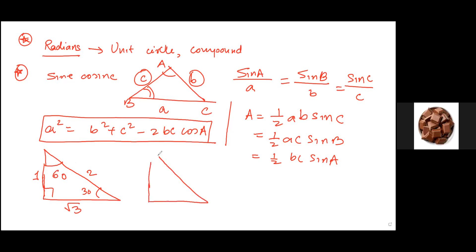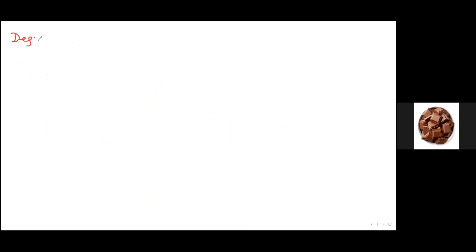Next is the 45-45-90 triangle, which has sides 1, 1, and hypotenuse root 2. What is really important is understanding the conversion from degrees to radians. To convert from degrees to radians, multiply by pi over 180. To convert from radians to degrees, multiply by 180 over pi.